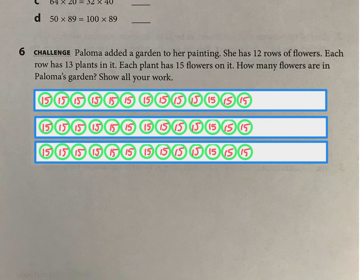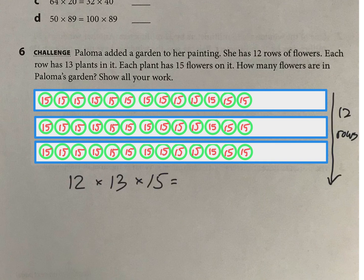Because really what we need to do here is just multiply. We need 12 times 13, and then whatever that is times 15 for each of the flowers. But the nice thing about this is we can multiply in any order we want to. So I'm actually going to do 12 times 15 first. And what I would do for 12 times 15 is I would have 12, I would double 15 to 30, and that's going to give me 180.